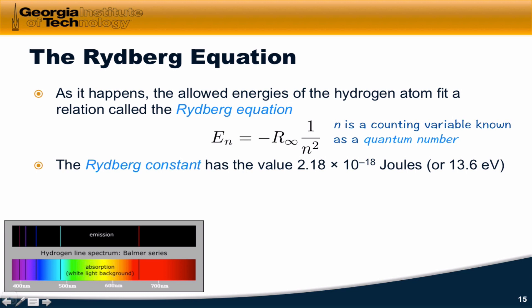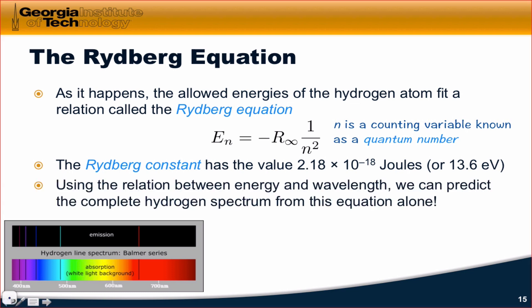Just to calibrate you on this, the Rydberg constant has a value of 2.18 times 10 to the negative 18 joules, and a unit of energy that's a little more intuitive at the microscopic scale, that's 13.6 electron volts. Remember, too, that the energy of a photon is equal to hc over lambda. So that means that we can use this relation between energy and wavelength to predict the complete spectrum of hydrogen.